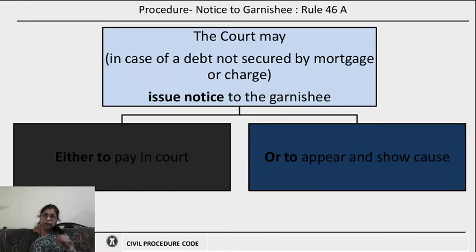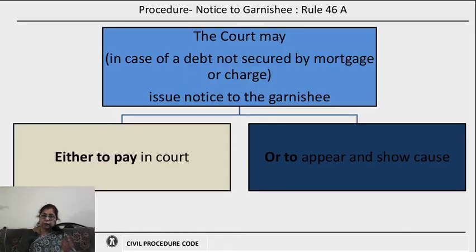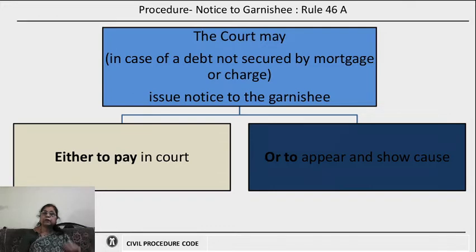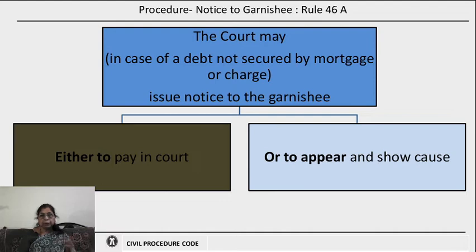Rule 46A speaks about the procedure of a garnishee proceeding — that is, notice to the garnishee. The court may, in case of a debt not secured by a mortgage or charge, issue notice to the garnishee. The notice may be for the purpose of either requiring the garnishee to pay into the court the amount specified in the decree along with the costs of the garnishee proceedings, or to appear and show cause why the garnishee order should not be issued against him.